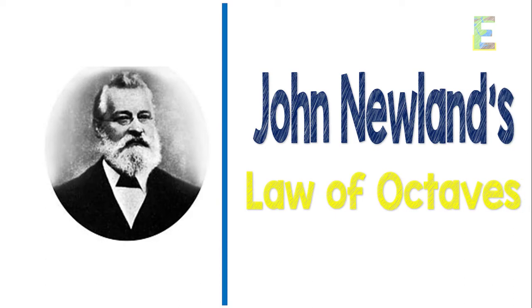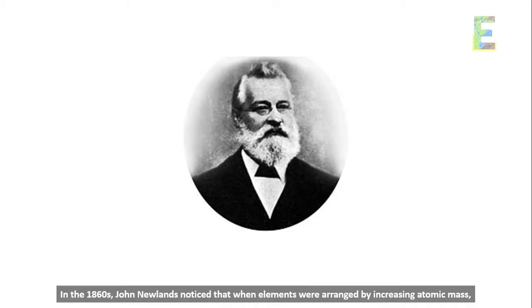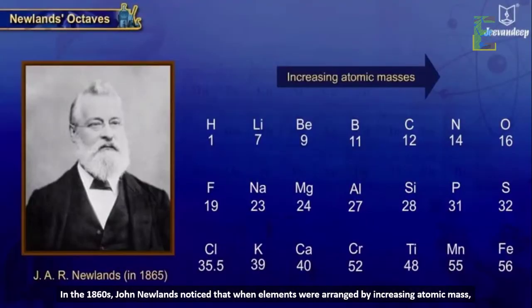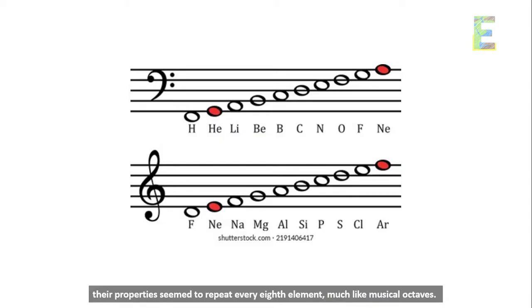John Newland's Law of Octaves. In the 1860s, John Newlands noticed that when elements were arranged by increasing atomic mass, their properties seemed to repeat every eighth element, much like musical octaves.